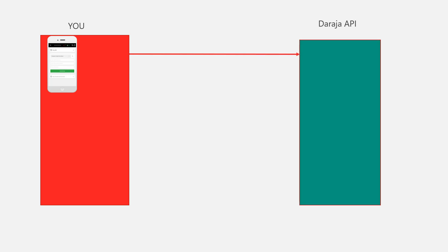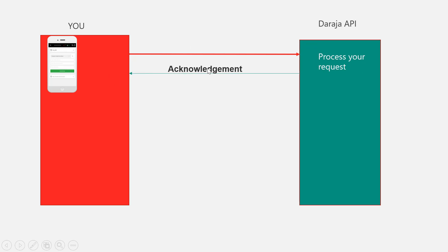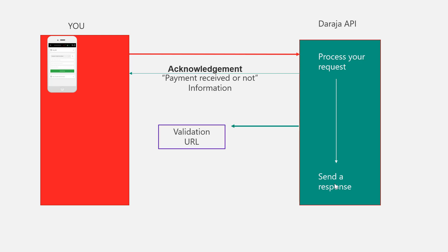The request goes straight to the Daraja API, where it processes your request and immediately gives you a synchronous acknowledgement telling you whether it's a success or not. Then it begins an asynchronous response cycle where it first sends you some data to your validation URL, where you are supposed to accept or reject the transaction.